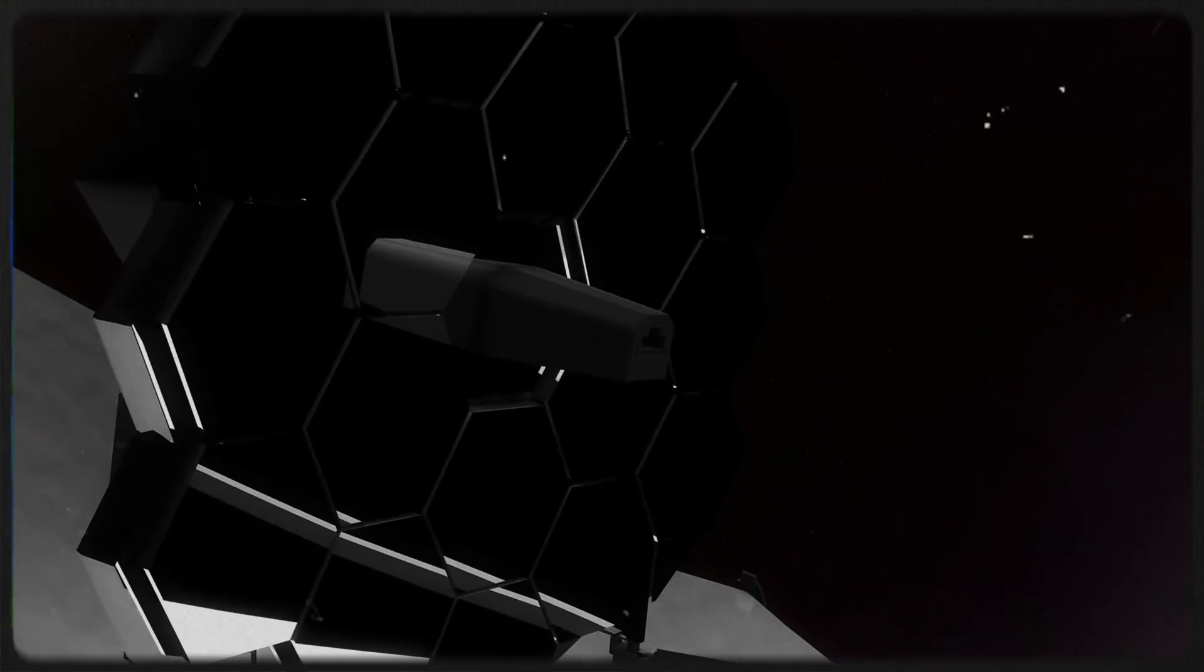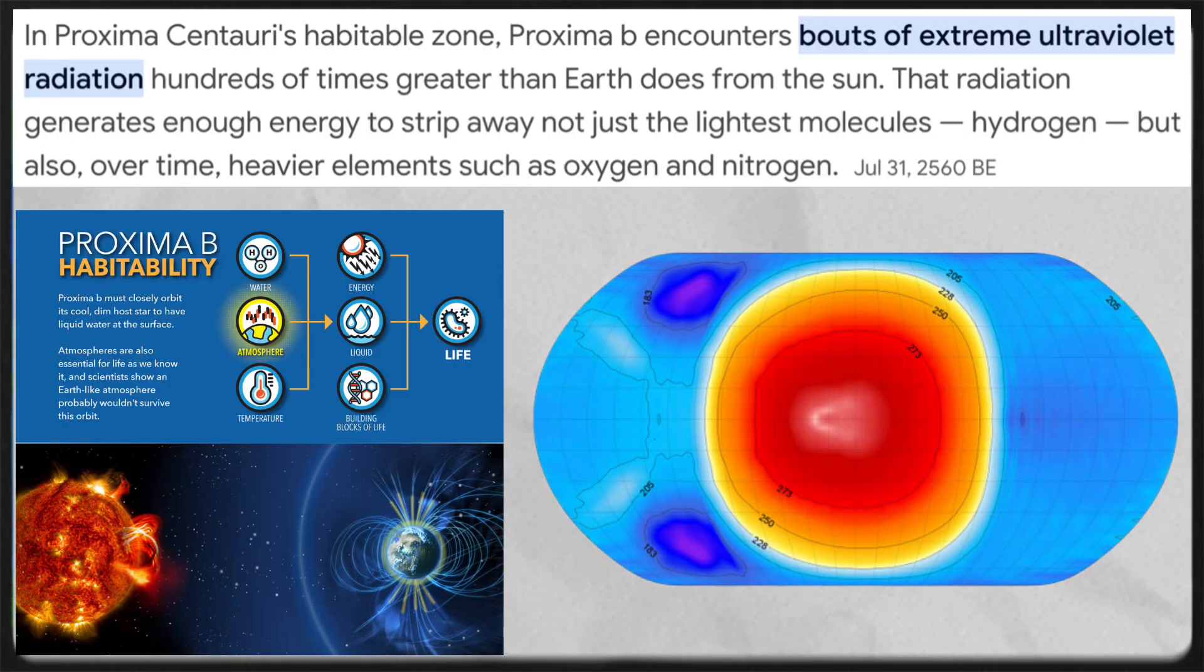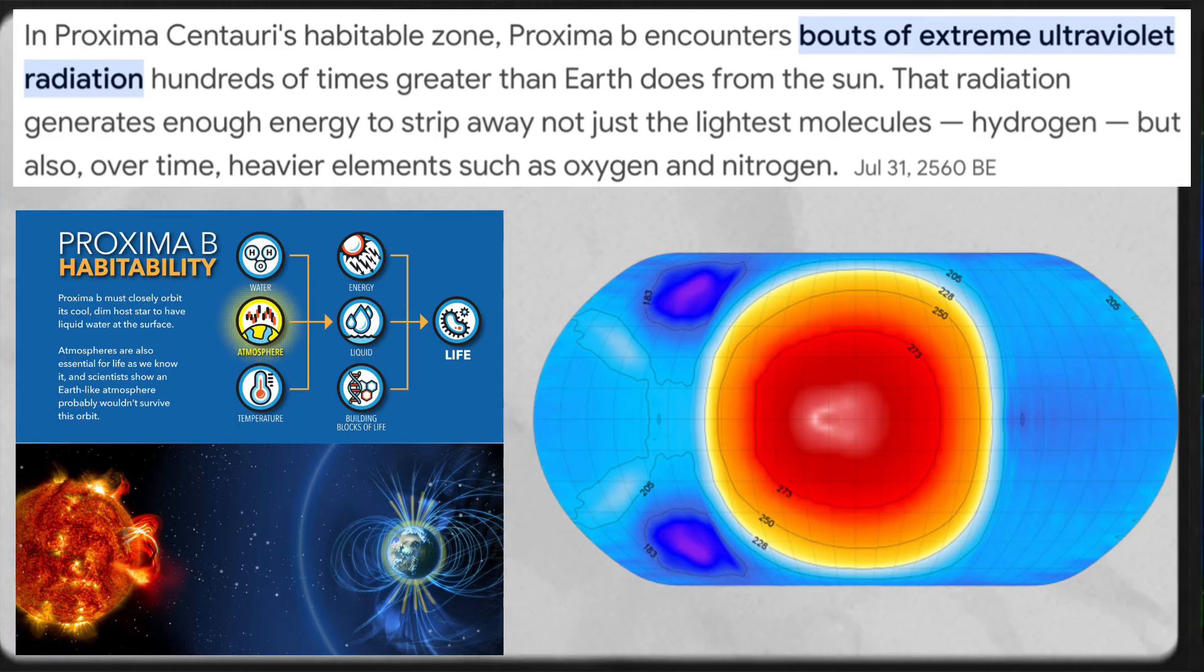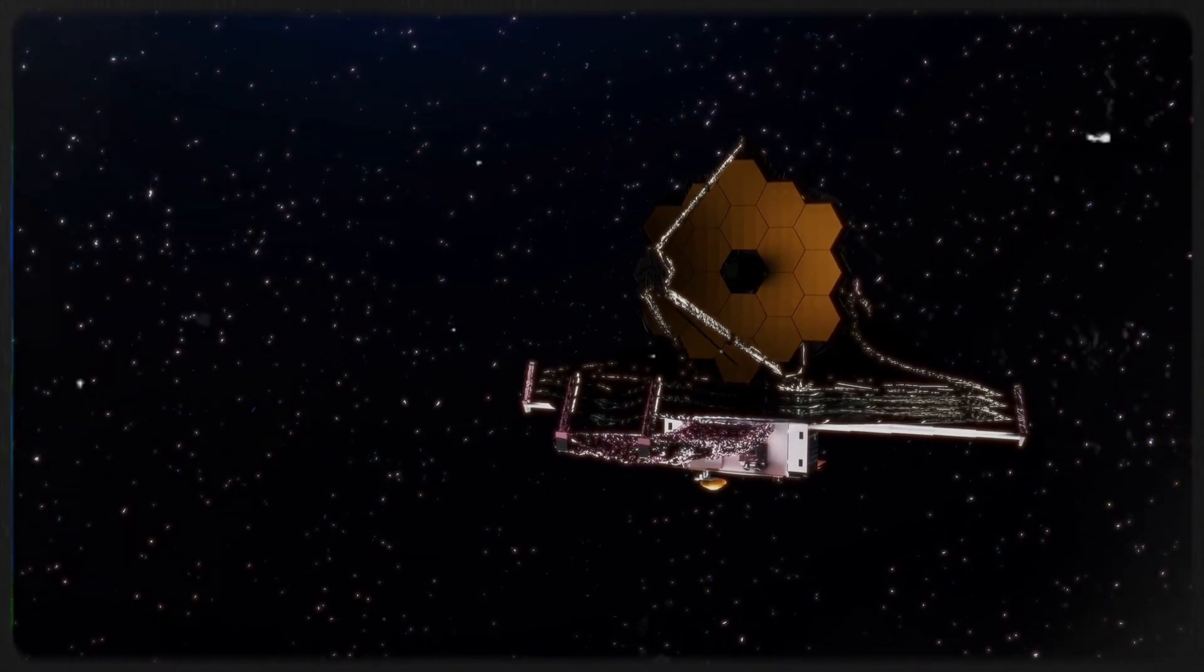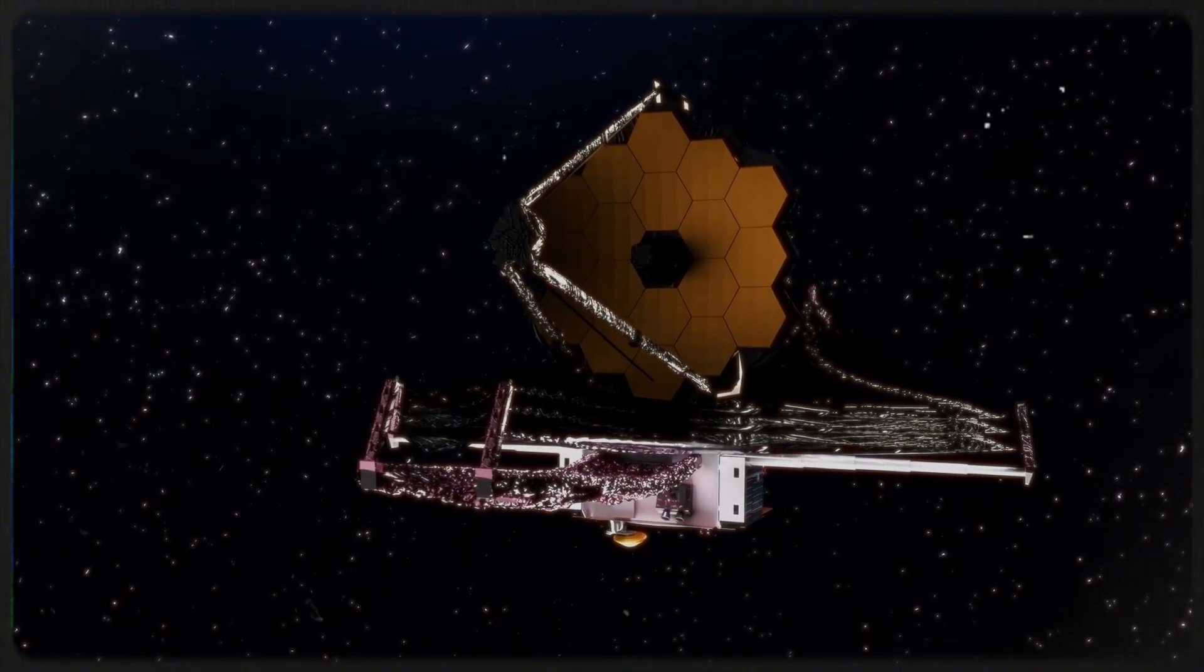This exoplanet's peculiar connection to its host star, Proxima Centauri, explains why it acts differently from typical rocky planets, which typically soak up solar radiation and emit infrared heat. Thanks to the James Webb Space Telescope, we now know how important it is. Understanding the atmospheric conditions of Proxima b relies on the telescope's capacity to detect infrared wavelengths. In the future, scientists hope to use this telescope to learn more about this planet's atmosphere and determine if it may support life.